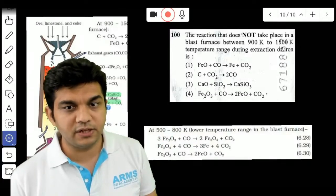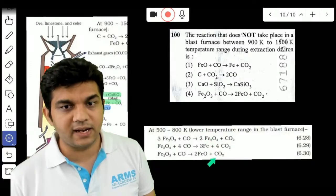Fe2O3 plus CO giving you 2 FeO plus CO2. This reaction Fe2O3 plus CO giving you 2 FeO plus CO2.